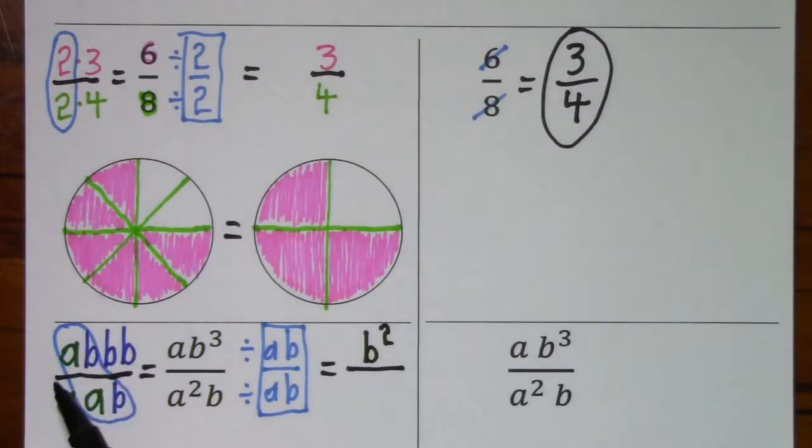When I say canceled, it actually becomes a 1, but you don't have to write it as long as you have something else in the numerator. So with the denominator, a squared b, when I divide by ab, I'm only left with a.